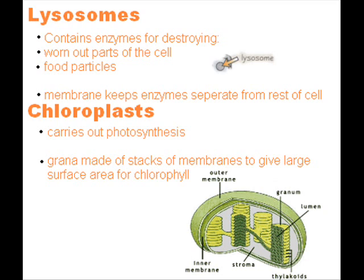A chloroplast is a small, flattened structure found in plant cells. It's surrounded by a double membrane, and also has membranes inside called thylakoid membranes. These membranes are stacked up in some parts of the chloroplast to form grana. Grana are linked together by lamellae — thin, flat pieces of thylakoid membrane. It's the site where photosynthesis takes place.